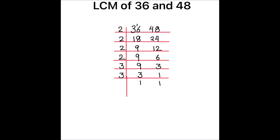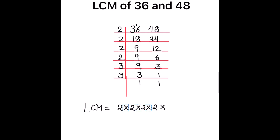For finding the LCM we are going to take the product of all the factors written on the left hand side of the ladder. So 2 times 2 times 2 times 2 times 3 times 3 is the LCM. Calculating: 2 times 2 is 4, 4 times 2 is 8, 8 times 2 is 16, and 16 times 9 is 144. So the LCM of 36 and 48 is 144.